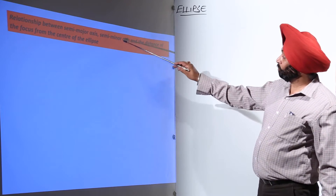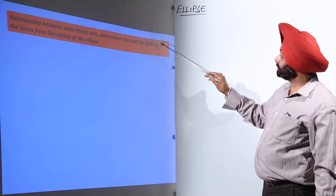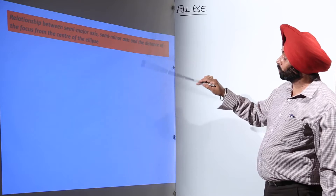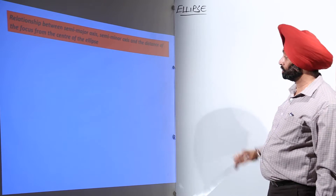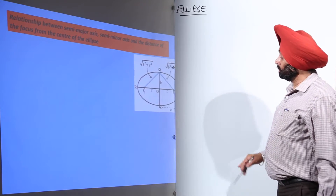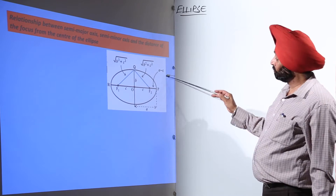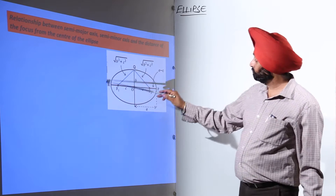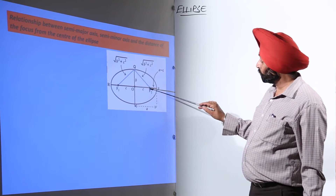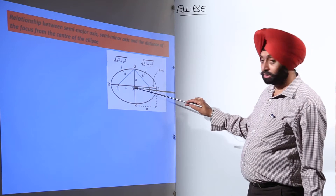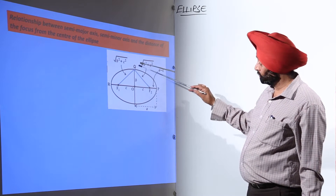Now the relationship between semi-major axis, semi-minor axis, and the distance of the focus from the center of the ellipse. Here we have a figure of an ellipse with foci F1 and F2, and O is the center of the major axis.